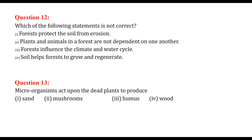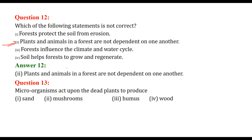Which of the following statements is not correct? The second one. This statement says: plants and animals in a forest are not dependent on one another. This is in fact wrong, because they are dependent on each other. Microorganisms act upon the dead plants to produce humus. These are a few questions and answers on forests.